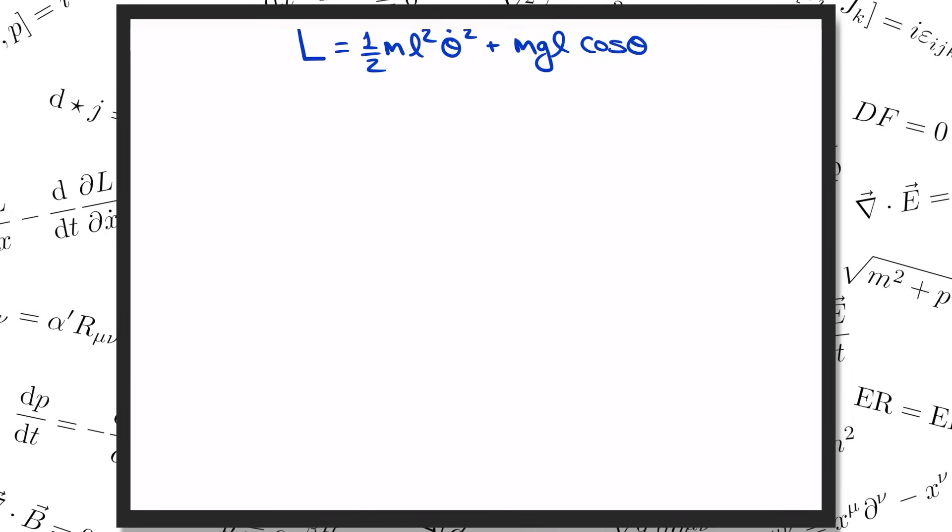So Newton told us to start by writing the total force and setting it equal to ma. Lagrange instead tells us to start by writing the Lagrangian like we have here, and then using it to write what's called the Euler-Lagrange equation. That's d by dt of dL by d theta dot equals dL by d theta.